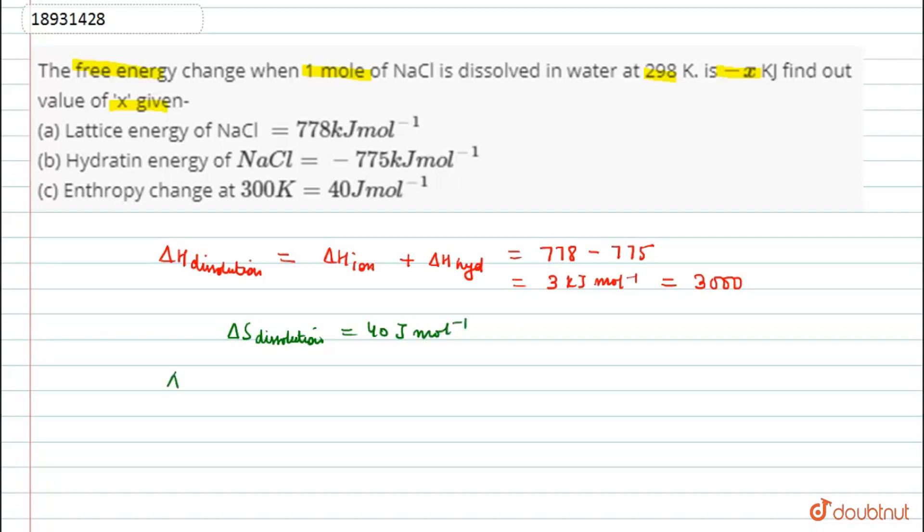And we know that Gibbs free energy, this is equal to delta H minus T delta S. We put values. Delta H, how much is it? 3000 minus temperature is 300 Kelvin into entropy change is 40. So, how much will this come from here? Minus 9 kJ.